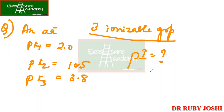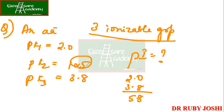A student suggests taking the average of 2.0 and 3.8, getting approximately 2.9. Another student confirms the same answer of 2.9, having taken the average of pK1 and pK3. The answer of 2.9 is correct. But why did you take pK1 and pK3 — why not pK1 and pK2, or pK2 and pK3?